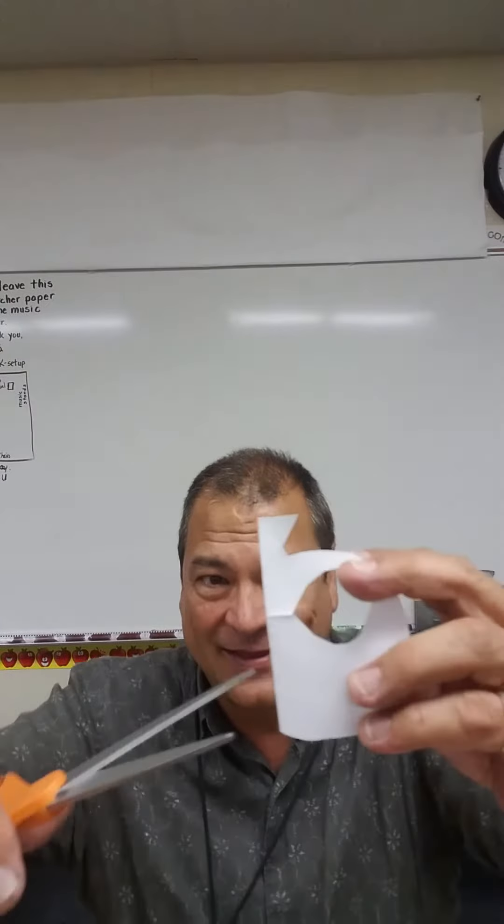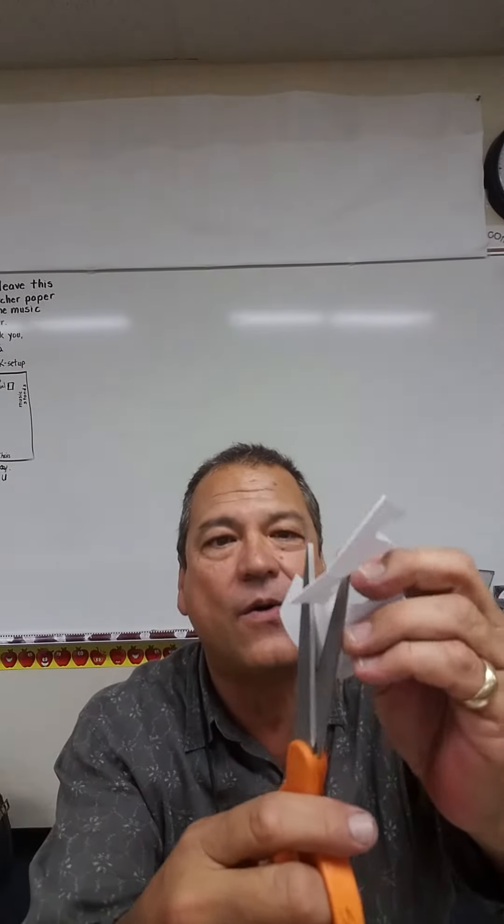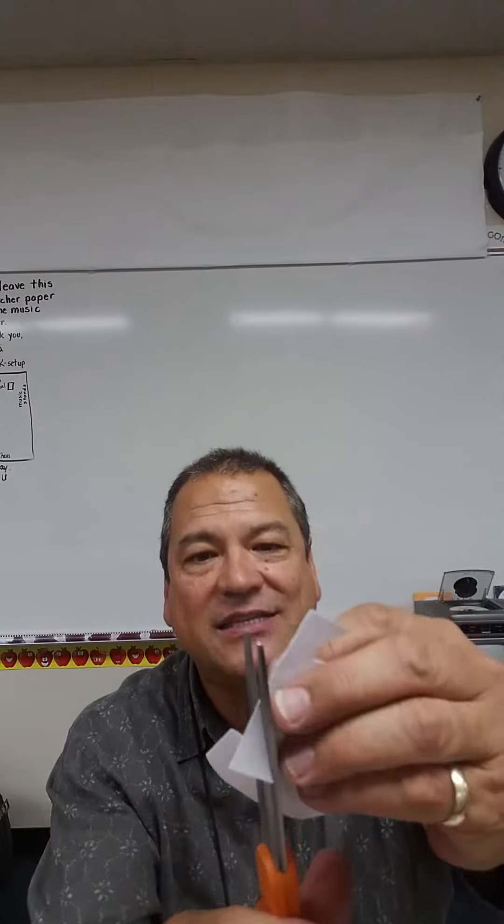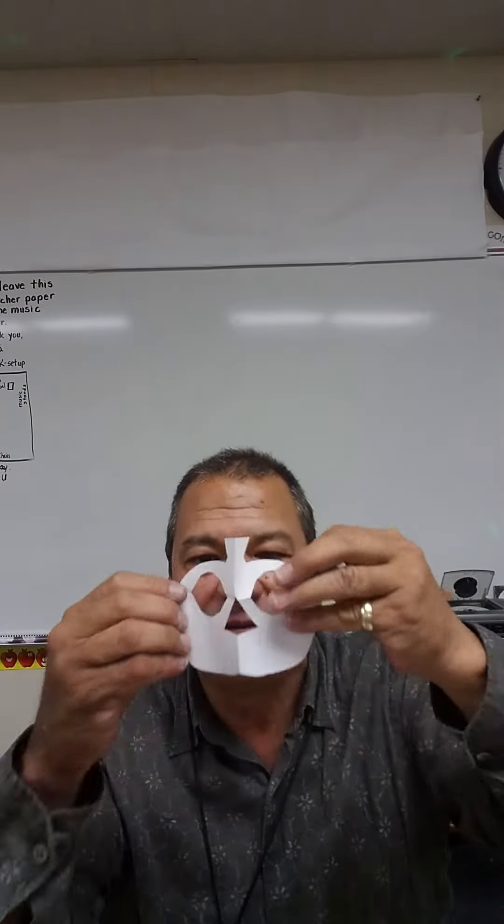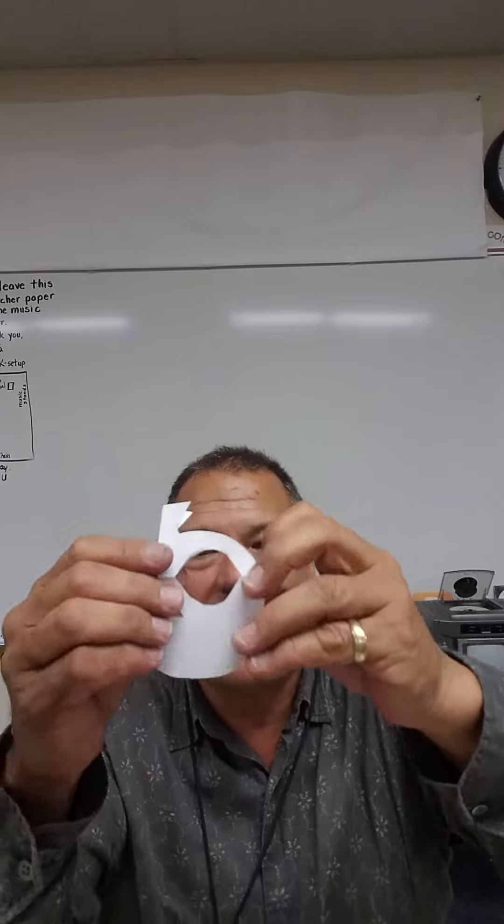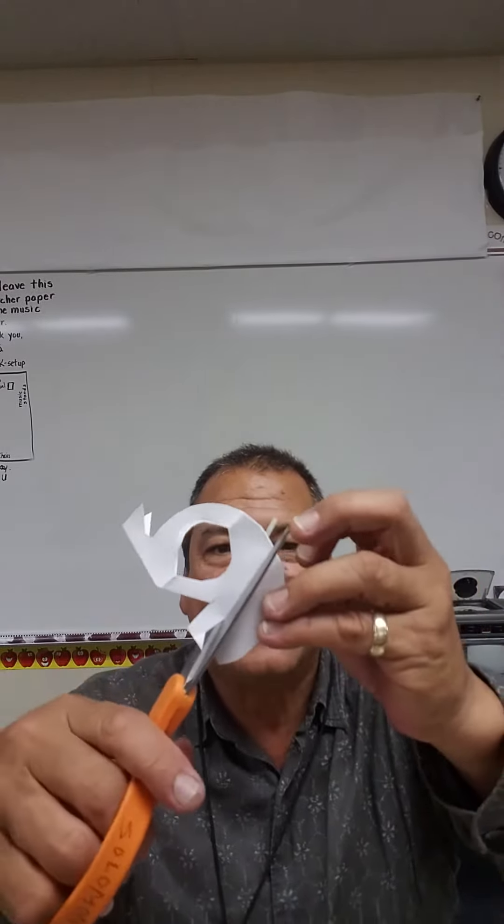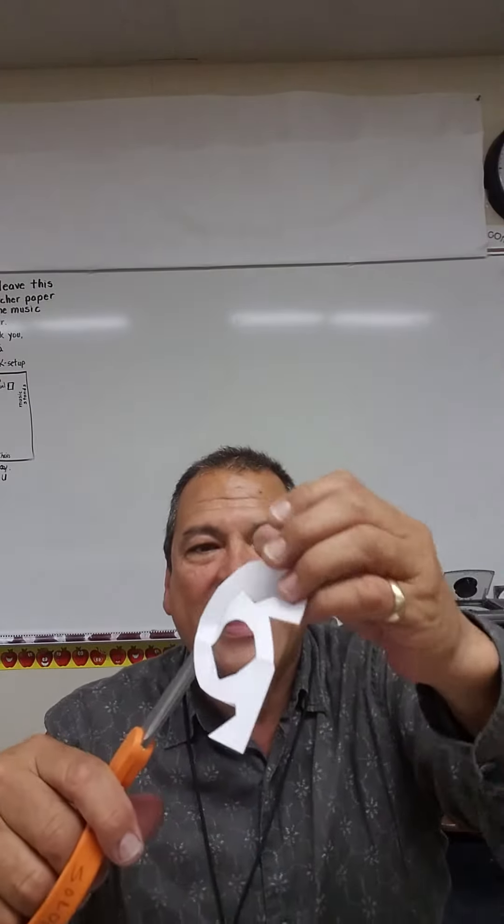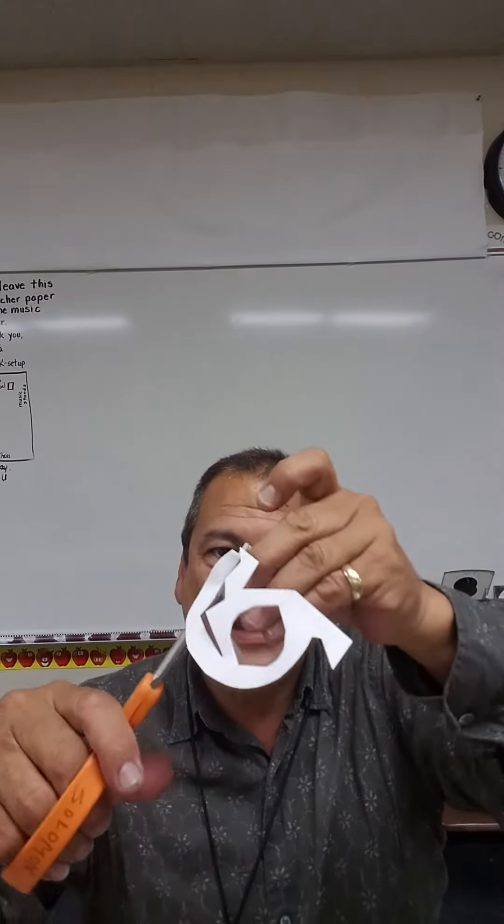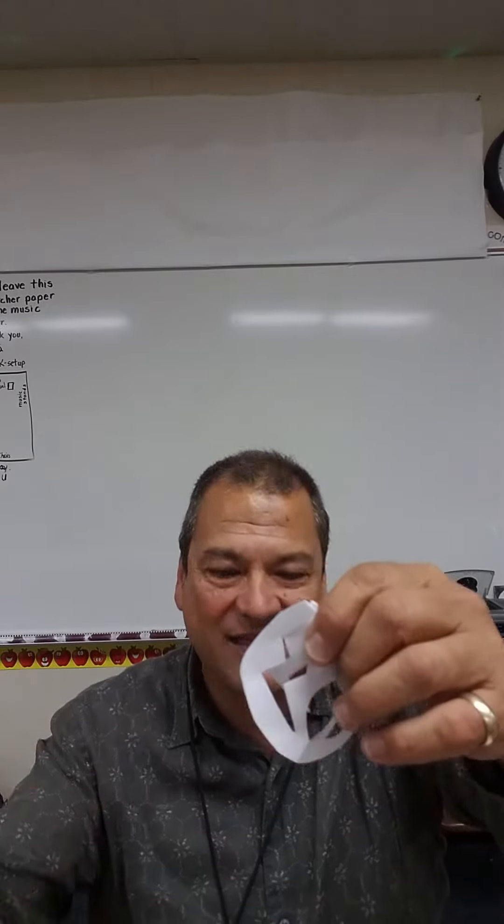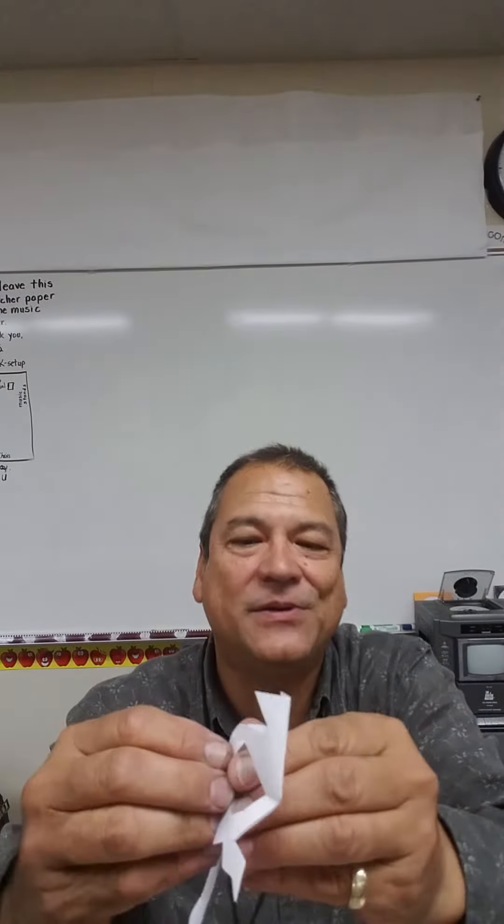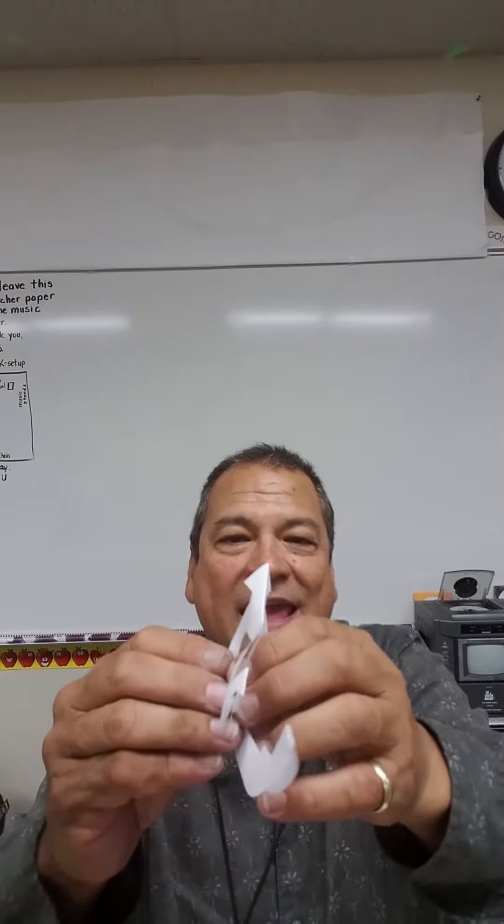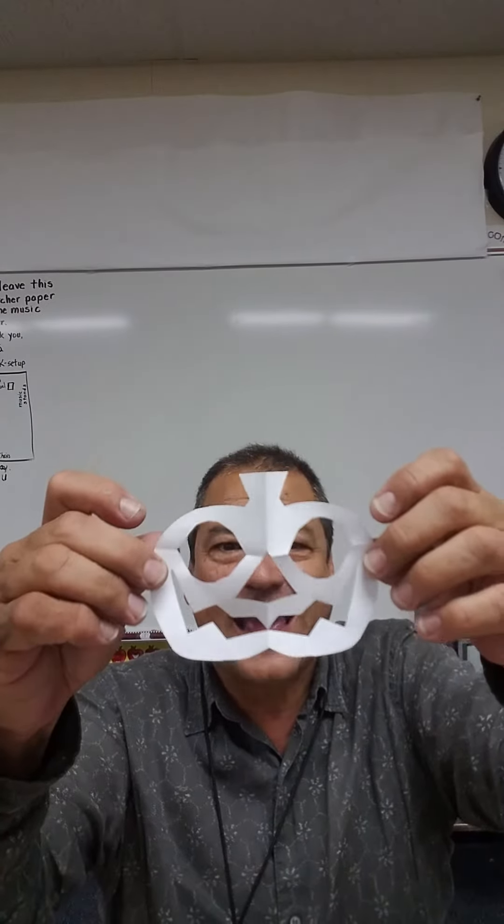These two holes are eyes that look so big and wise. And this three-cornered hole is the nose. A mouth I'll make right here underneath. It ought to have some big grinning teeth. It's plain to be seen.